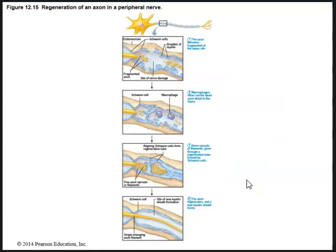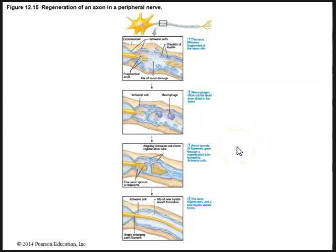Here we can see regeneration of an axon in a peripheral nerve. We see the site of nerve damage — the axon becomes fragmented at the injury site. Then macrophages come in and clean out the dead axon distal to the injury. Next, the axon will sprout filaments that grow through a regeneration tube formed by Schwann cells. Finally, the axon will regenerate and a new myelin sheath forms at the site.